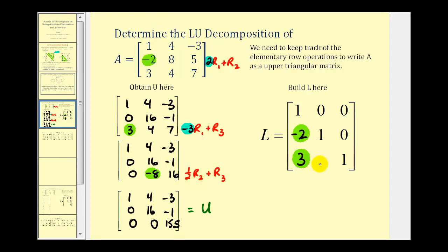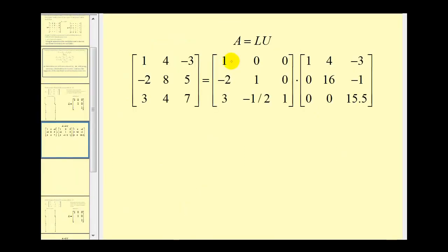To complete our lower triangular matrix, our multiplier in this case was positive one half to obtain a zero in row three, column two. The opposite of positive one half is negative one half, so this element is negative one half. Now we have our LU decomposition. Here's matrix L and here's matrix U. So putting the pieces together, A equals L times U: here's matrix A, the given matrix; here's the lower triangular matrix; and here's our upper triangular matrix.